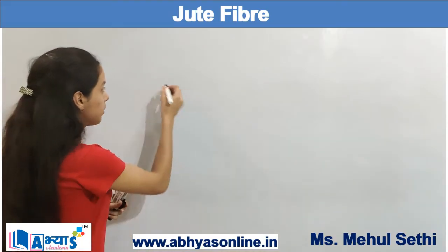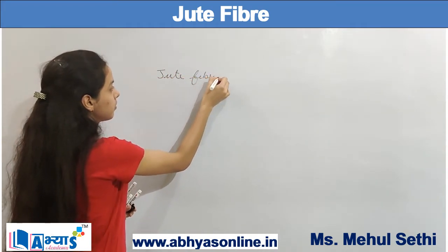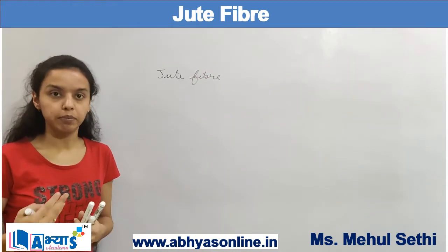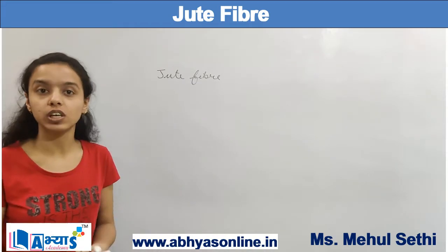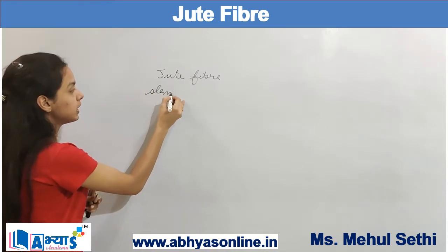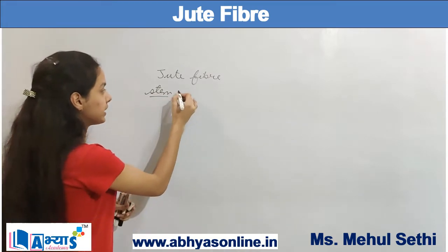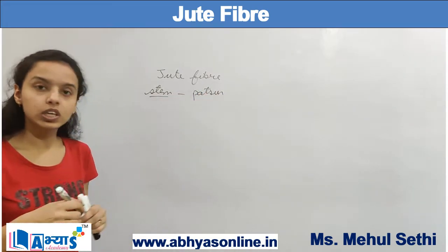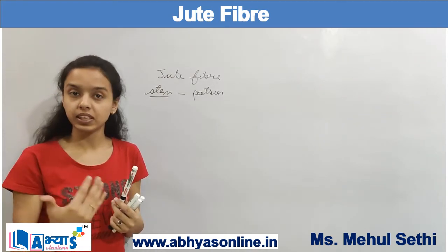Let us discuss the concept of jute fiber. Jute is a type of natural fiber obtained from plants, so we can say that jute is a plant fiber. It is obtained from the stem of the plant, and the jute plant is basically known as the patson. So jute is obtained from the stems of the patson plant.